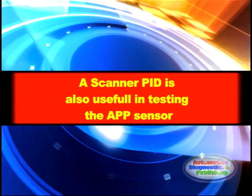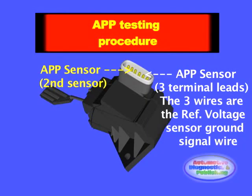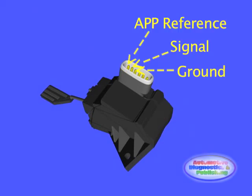Despite today's faster and better scan tools, the second step to this procedure should always be followed by a manual electrical APP diagnostic. The first step is to prove the APP voltage reference and ground circuits. These circuits are provided by the ECM independently of each other for redundancy.